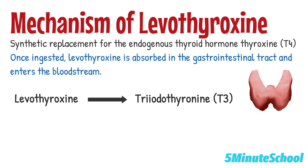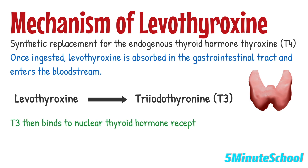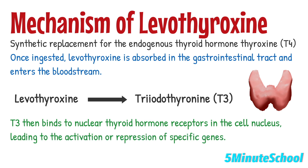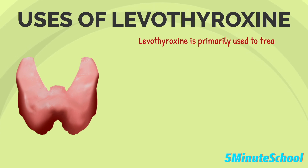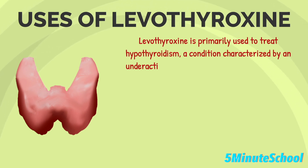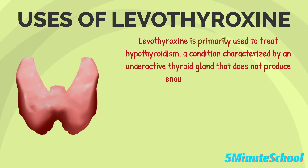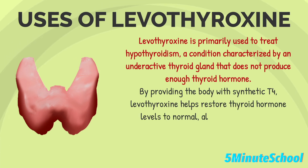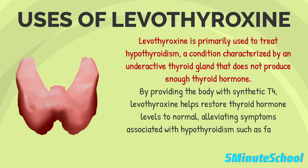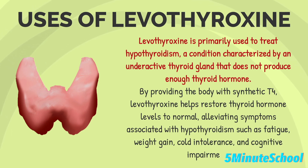T3 then binds to nuclear thyroid hormone receptors in the cell nucleus, leading to the activation or repression of specific genes. This process ultimately regulates various physiological processes including metabolism, energy production and growth. Levothyroxine is primarily used to treat hypothyroidism, a condition characterized by an underactive thyroid gland that does not produce enough thyroid hormone. By providing the body with synthetic T4, levothyroxine helps to restore thyroid hormone levels to normal, alleviating symptoms like fatigue, weight gain, cold intolerance and cognitive impairment.